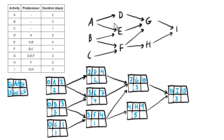Now we move into the backward pass. We take the early finish of the last activity and bring that into the late finish position — so thirteen goes there for activity I. We subtract the duration to get the late start: thirteen minus three is ten. When there's only one successor, we bring that late start value straight in. So ten comes into the late finish of both G and H. Subtracting durations: ten minus three gives seven for G, and ten minus five gives five for H.